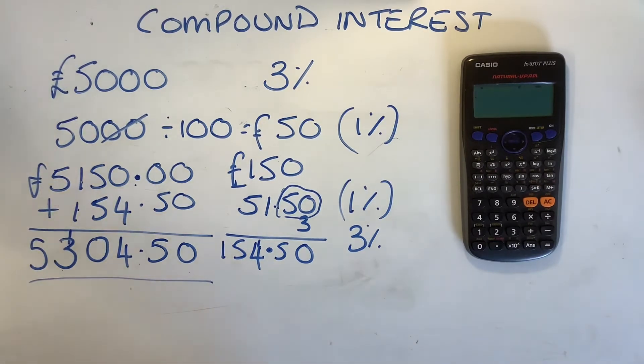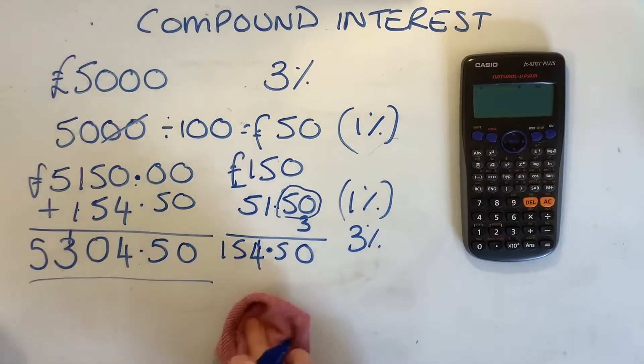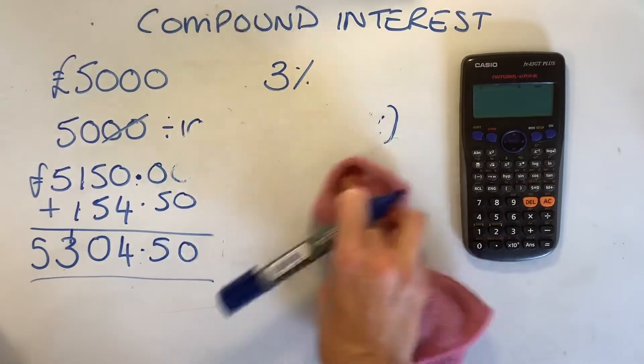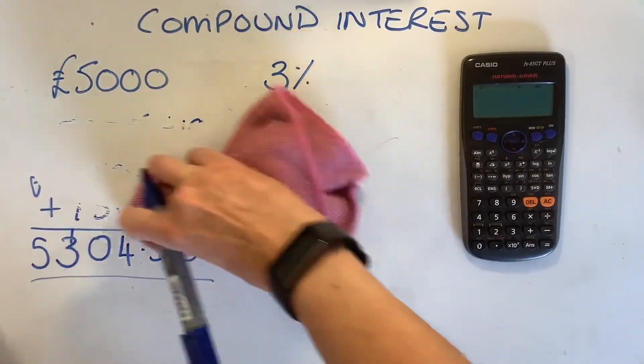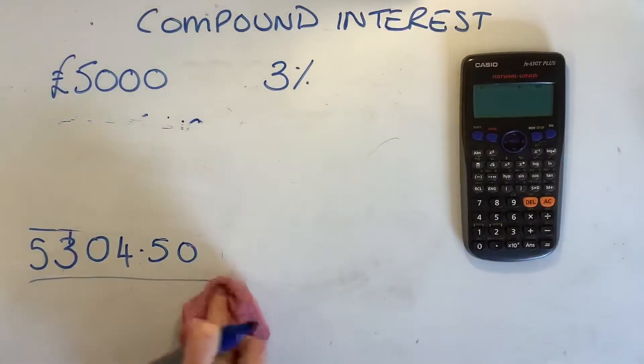I'm now going to show you another way. I'm going to keep that amount, £5,000. I'll just leave it there, where it is, because this method is nice and easy and won't even take up much space.